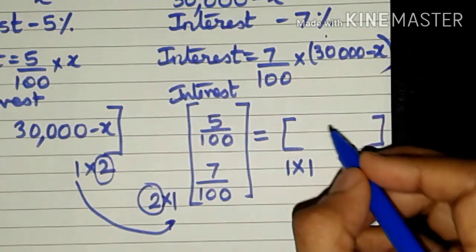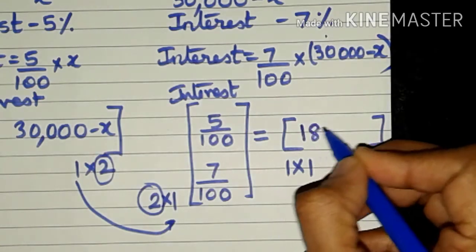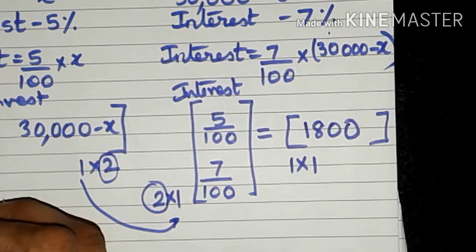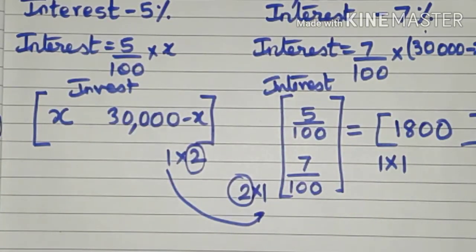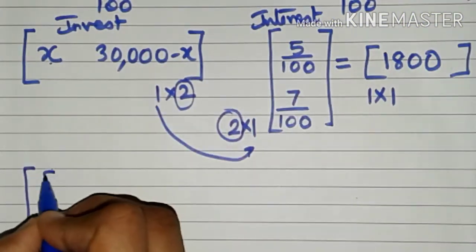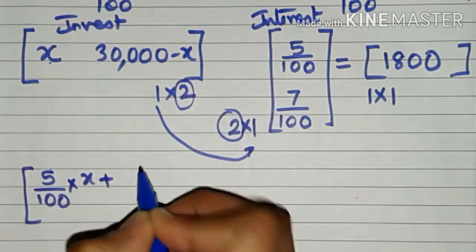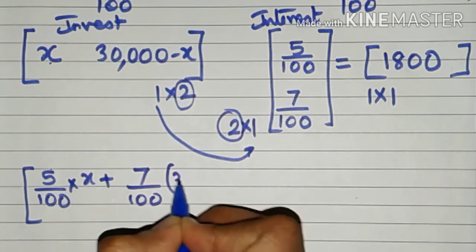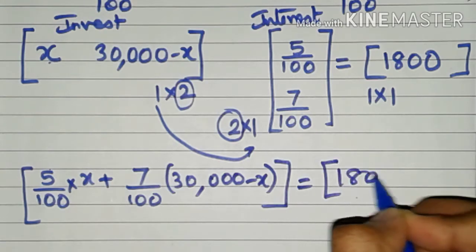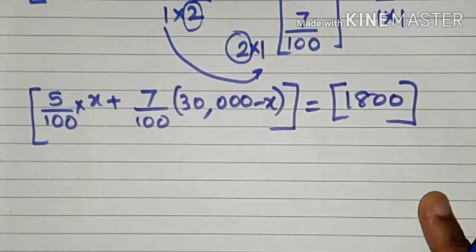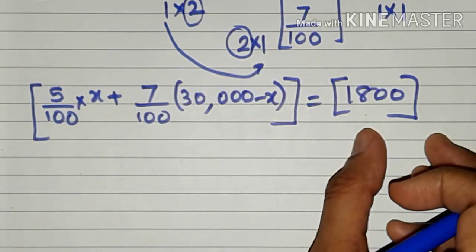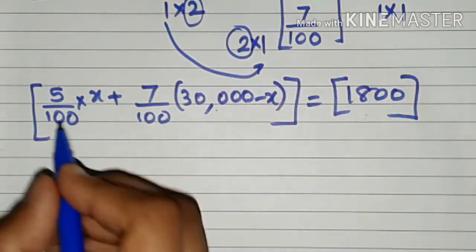In part (a) of the question, this total annual interest is 1800. What is unknown is the value of x. So let us do the matrix multiplication. We get x times 5/100 plus 7/100 times (30,000 minus x) equal to the 1 by 1 matrix containing 1800. Since these two matrices are equal, the corresponding matrix elements are equal, so let us equate them.